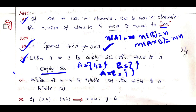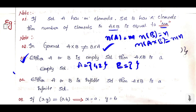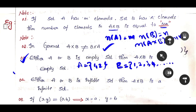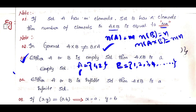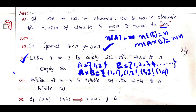Fourth point: if either A or B is an infinite set, then A cross B is an infinite set. For example, if set B = {1, 2, 3, 4, ...} is infinite, then A cross B keeps going: ordered pairs (1,1), (1,2), (1,3), (1,4), (1,5), and so on infinitely. So if either A or B is infinite, then A cross B is also infinite.